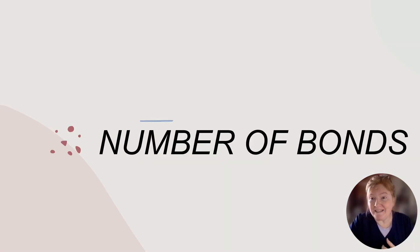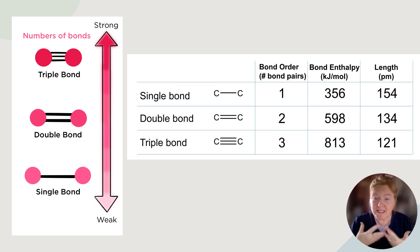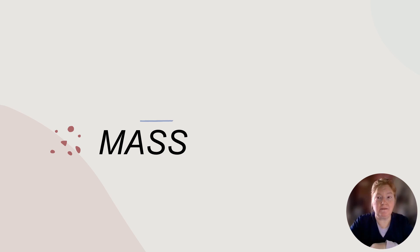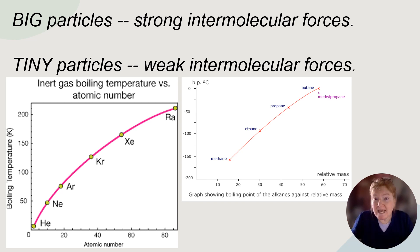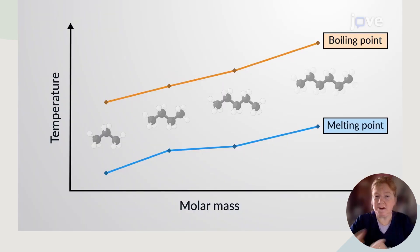The number of bonds also matters. Single bonds, double bonds, and triple bonds would be intramolecular forces, but if there are more intermolecular forces on the same molecule, it's stronger. Mass is another factor — big particles with more mass have stronger intermolecular forces, and tiny particles with less mass have weaker intermolecular forces. You can see on this graph that helium, which has a much lower mass than radium, has a much lower boiling point. As molar mass increases, the melting point and boiling point increase, and the intermolecular forces get stronger.